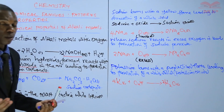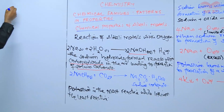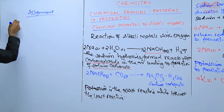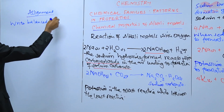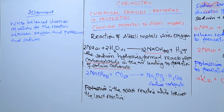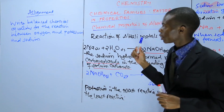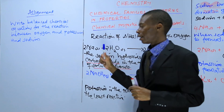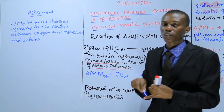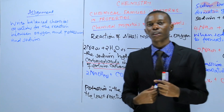That brings us to the end of our lesson today. Before we end, here is your assignment: write balanced chemical equations for the reaction between oxygen and potassium, and between oxygen and sodium — showing how both of them react with oxygen.